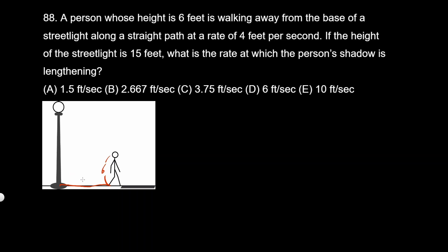I'm going to call that distance x, so the length is called x. That means dx/dt — this is related rates by the way — the rate at which x increases as time ticks is 4 feet per second. And then we have a simple right triangle here. We're given that the street light is 15 feet. And the person's shadow, let's call that y.